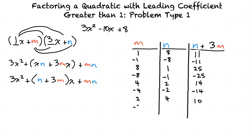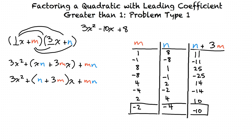But if we try m equals negative 2 and n equals negative 4, the result is negative 10 — and that's what we want. We want n plus 3m to equal negative 10 and m times n to equal positive 8. So m equals negative 2 and n equals negative 4. Substituting these into x plus m and 3x plus n, we get x minus 2 times 3x minus 4.